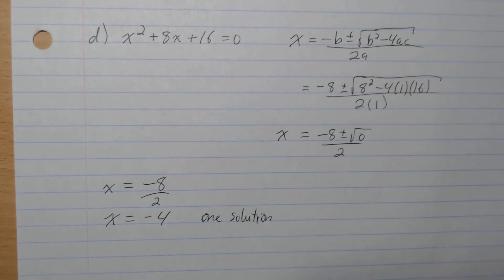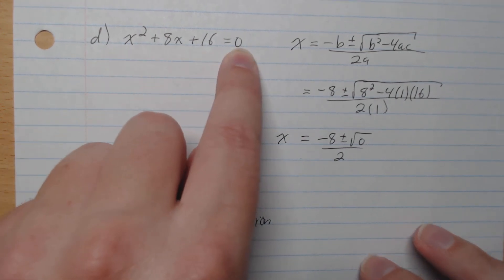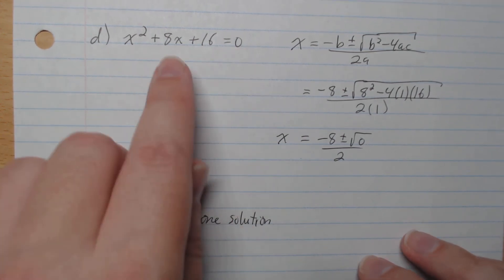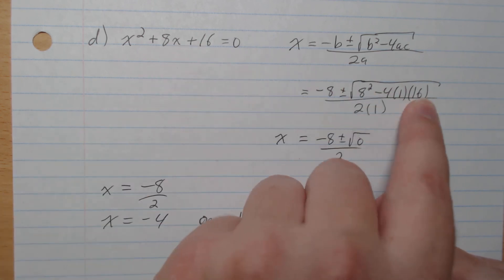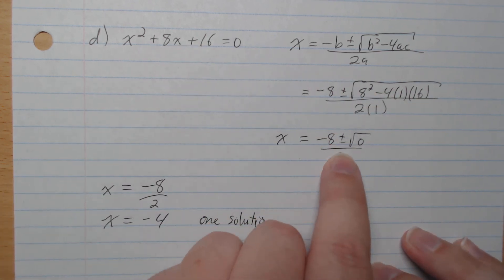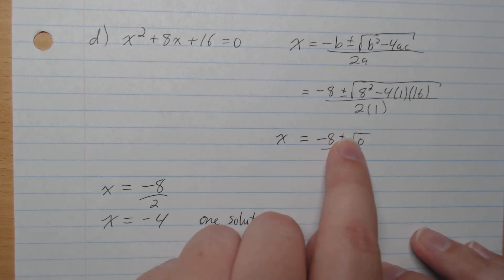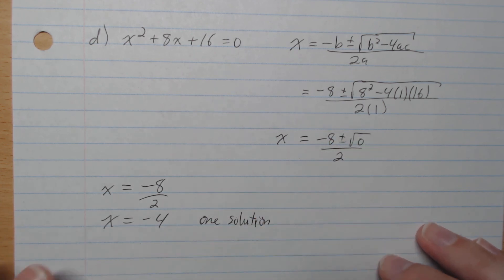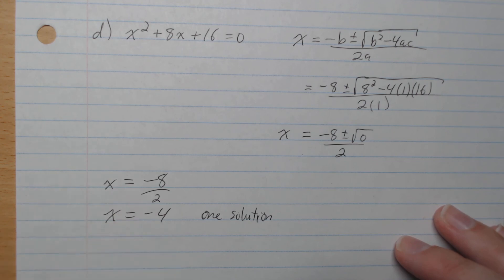D: x squared plus 8x plus 16 equals 0. A is 1, B is 8, and C is 16. Plug it in — we get plus or minus root 0, which is plus or minus 0. So there's only one solution: negative 8 over 2, which gives x equals negative 4.